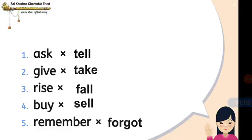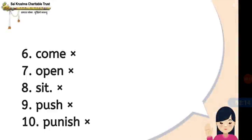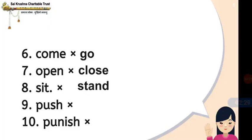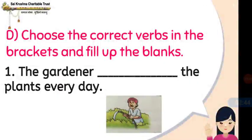The opposite for remember is forgot. Like this we have to fill the opposites. For the sixth one: Come — Go. Open — Close. Sit — Stand. Push — Pull. Very good. Punish — I think this you don't know, right? That is reward.